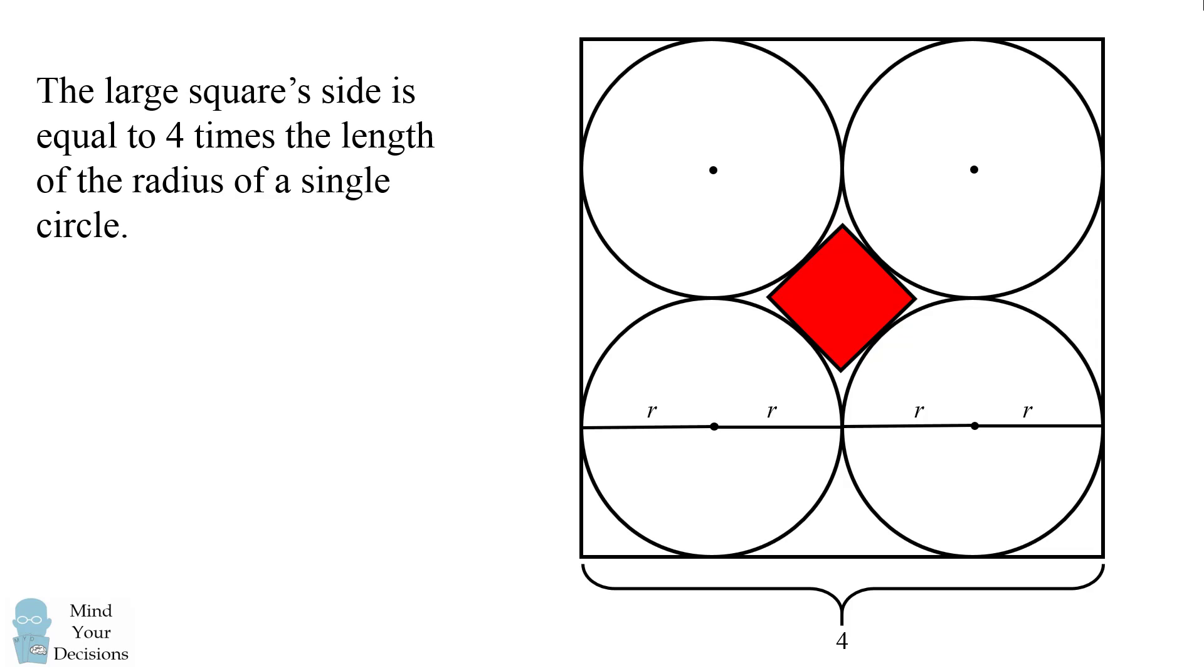The large square side is equal to four times the length of the radius of a single circle and this is equal to four. So we can solve that each circle has a radius r equals one.